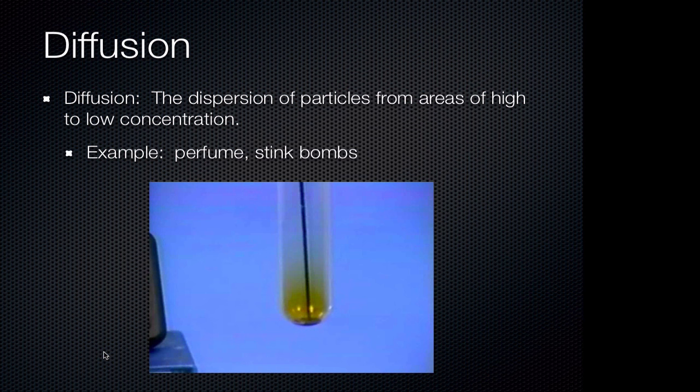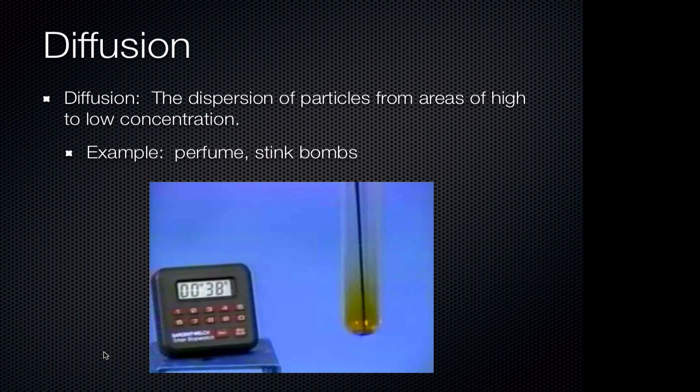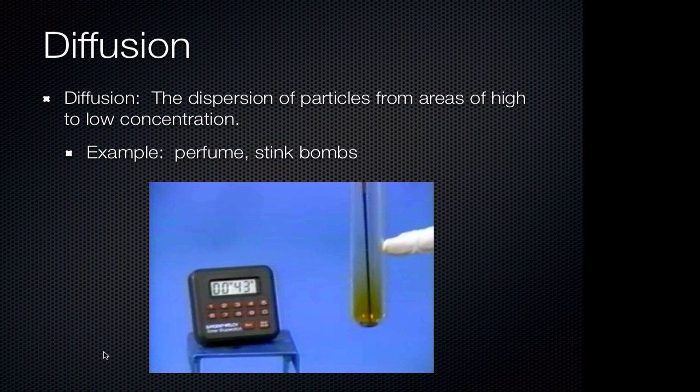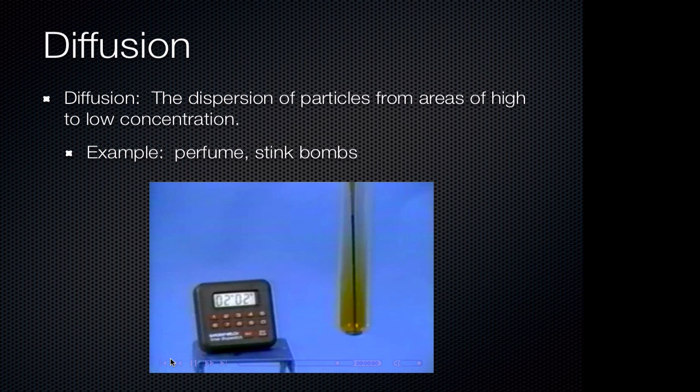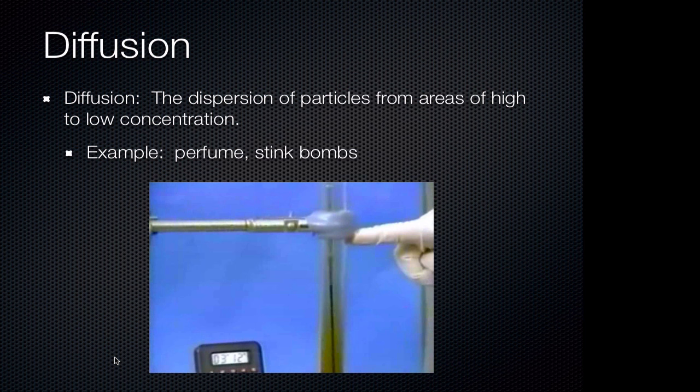The reddish-brown bromine molecules diffuse up the tube. Although the bromine molecules are moving at speeds of several hundred meters per second, their constant collision with nitrogen and oxygen molecules of the air cause them to constantly change direction, so that their overall movement up the tube is rather slow. After two minutes, they are only about halfway up the test tube. It actually takes over three minutes for the bromine molecules to diffuse up to the clamp near the top of the test tube.